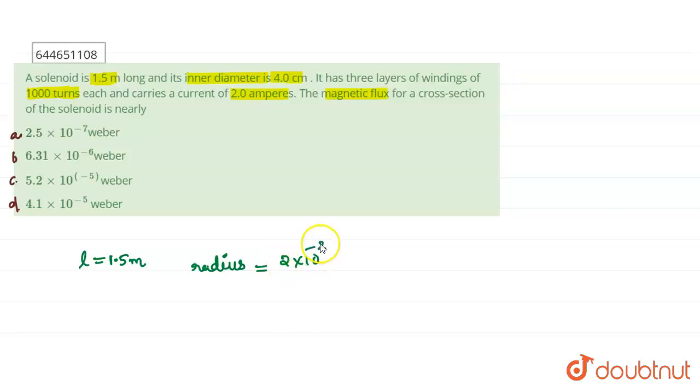Then how many turns are there? There are thousand turns, so capital N is equal to 1000. And what is the current traveling through that solenoid? It is 2 amperes.